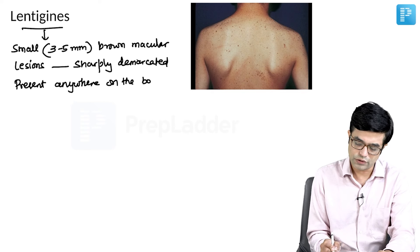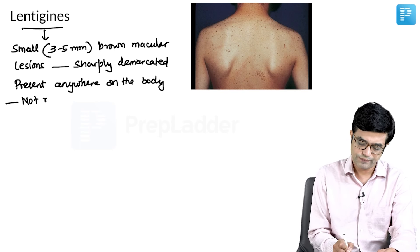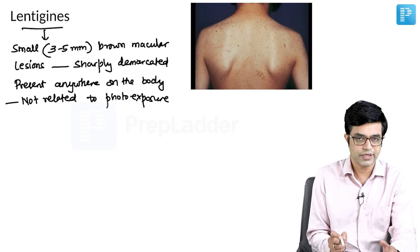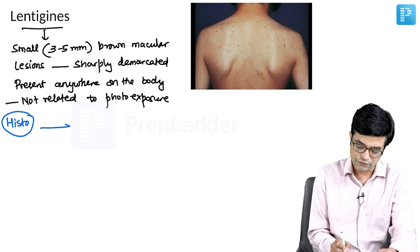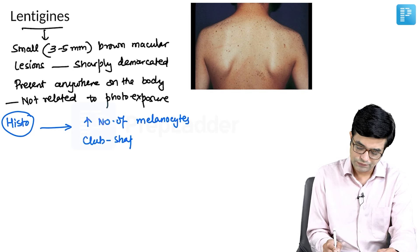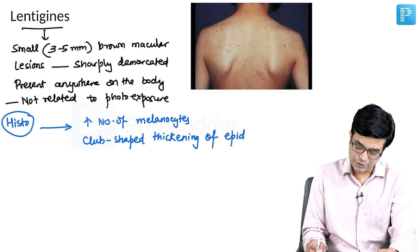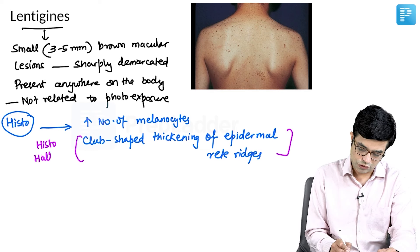Lentigines are not only restricted to photo-exposed parts. In fact, they are very commonly seen on the trunk, so they are present anywhere on the body and are not related to photo exposure or ultraviolet exposure. The important point about lentigines is the histological pattern. On histology, you will find that there is an increase in the number of melanocytes and there is club-shaped thickening of epidermal rete ridges. This feature is considered to be the histological hallmark of lentigines.